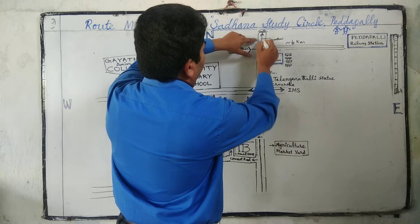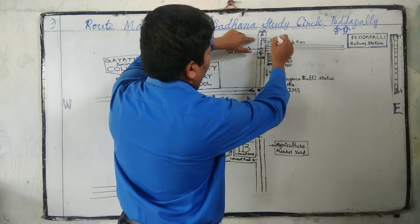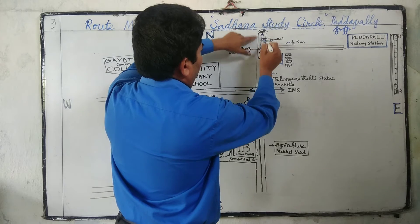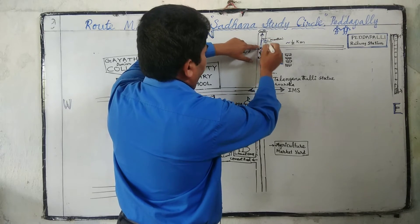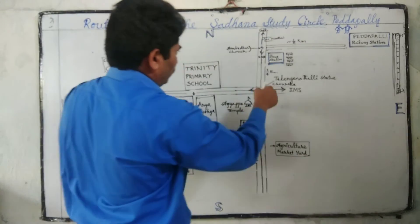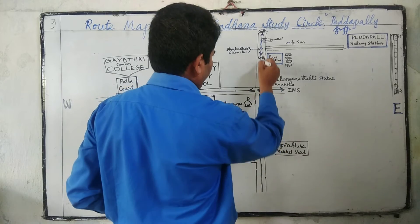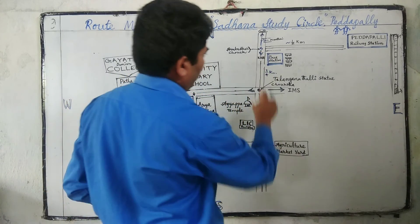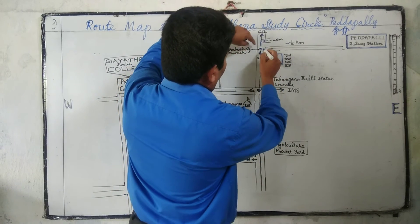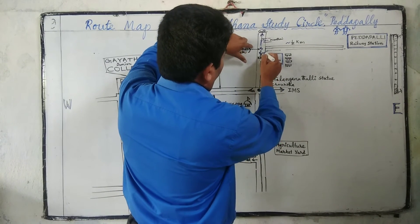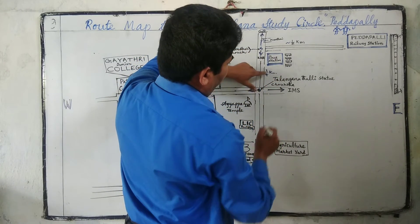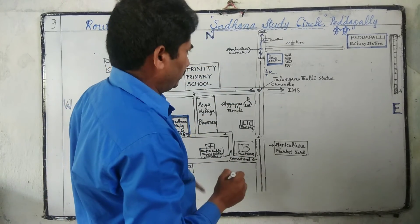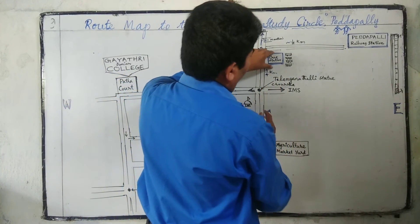After approximately half a kilometer, we can reach Ambedkar Chowk. On the north side there is the Manthani and GDK route. On the south side we have the Karimnagar route. From here, approximately three-quarters of a kilometer, we can reach Sadhana Study Circle.